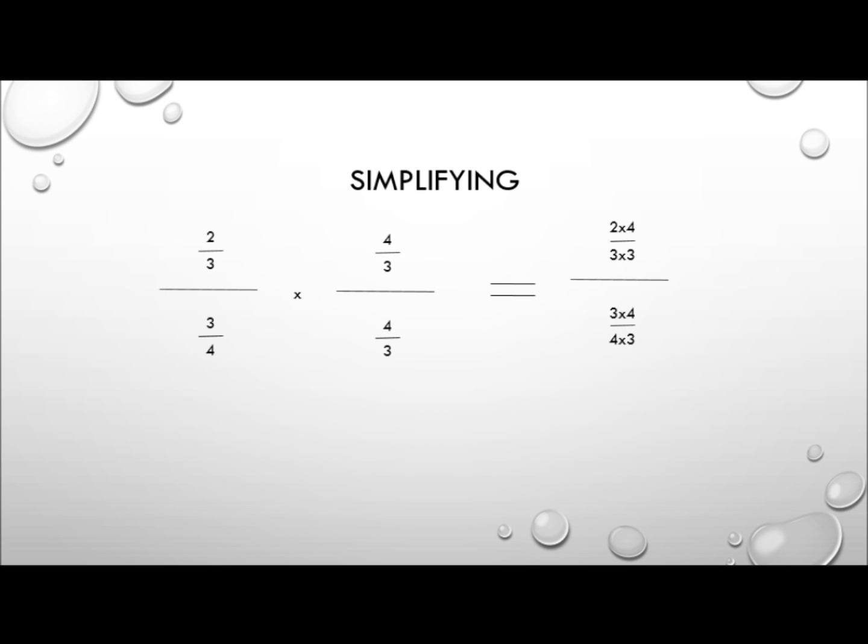In this case, 3 quarters, we can turn that into 1 by making it into 4 thirds, or by multiplying by 4 thirds. That then gives us 3 times 4 over 4 times 3, which is 12 over 12, which is 1.